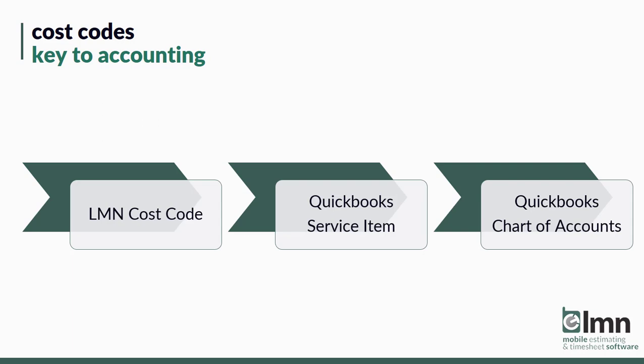Your cost codes are linked to QuickBooks service items, and QuickBooks service items are all tied to charts of accounts. That's how estimate revenue from LMN gets into the appropriate revenue account in QuickBooks. The same thing applies for timesheets — when we're booking time against a job, every task has a cost code. The task cost code determines what QuickBooks service item it goes into, which determines where the payroll expenses for those timesheets get booked in our chart of accounts.